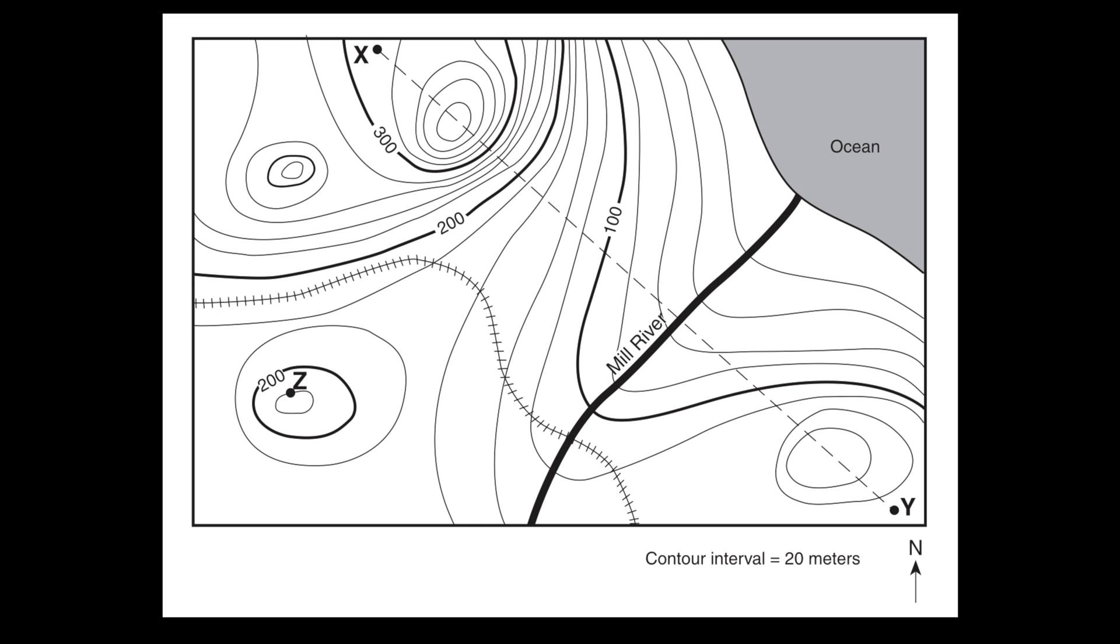I also see some index contours. These are the darker contour lines that are labeled and those elevations are shown 100, 200, 300 meters.